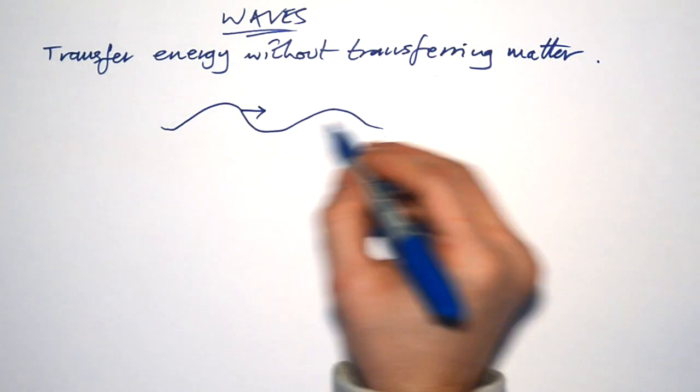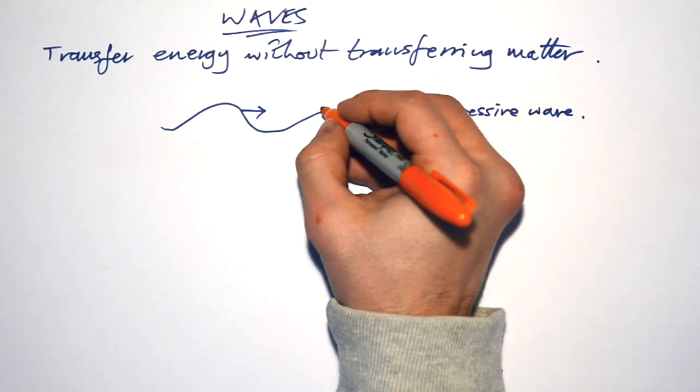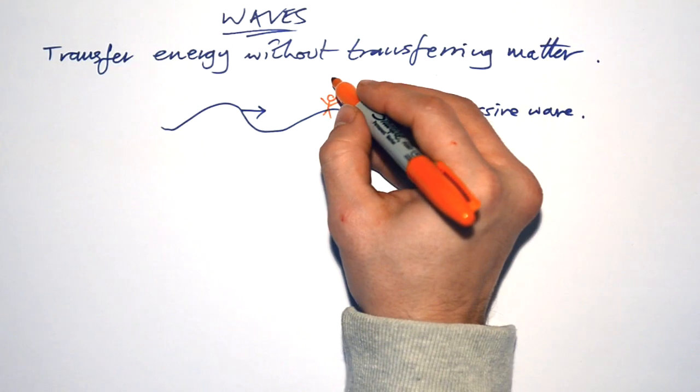So if you're in the ocean and a wave comes along, by the way, this is what we call a progressive wave. Progressive wave is one that actually moves. If you're in the ocean and you're there, you can't go with the wave, you're just going to go up and down.